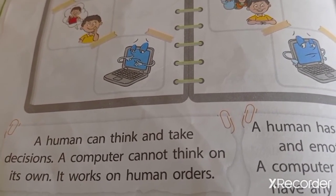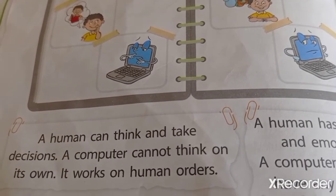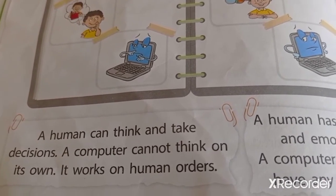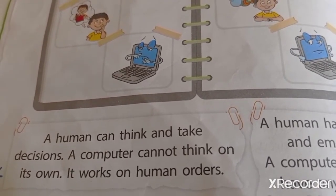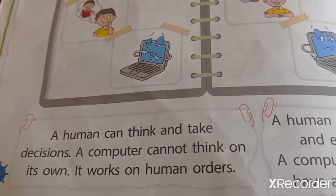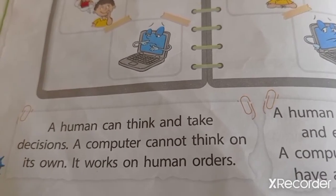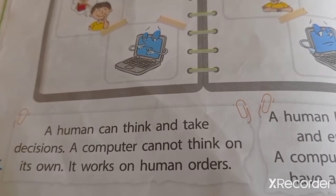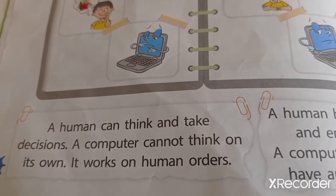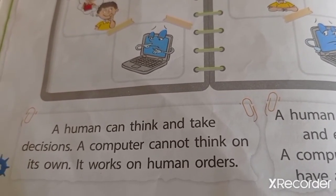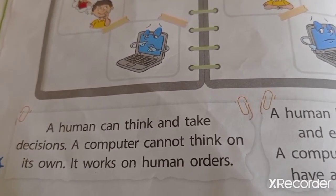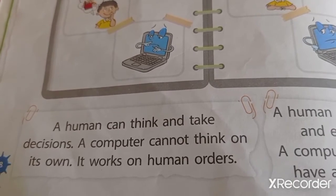You can take decisions yourself — what you want to do, what you want to eat, what you want to drink — but the computer cannot think for itself. It works on human orders. Just like humans give instructions, it works like that.